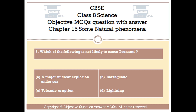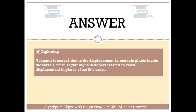The right answer is Option D — Lightning. Tsunami is caused due to the displacement in tectonic plates inside the Earth's crust. Lightning is in no way related to causing displacement in the plates of Earth's crust.